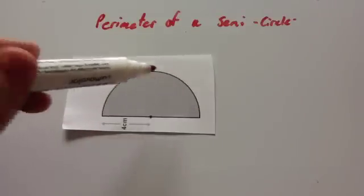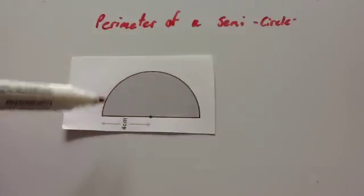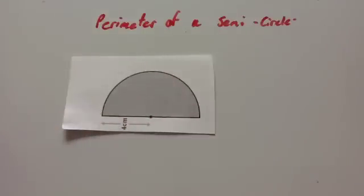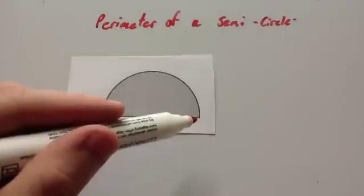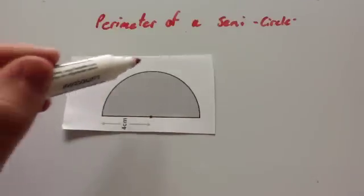So you've got the curved or the arc of the circle, and then you've got a straight line. So to find the perimeter, you're going to need to add together the base and the length of the arc.